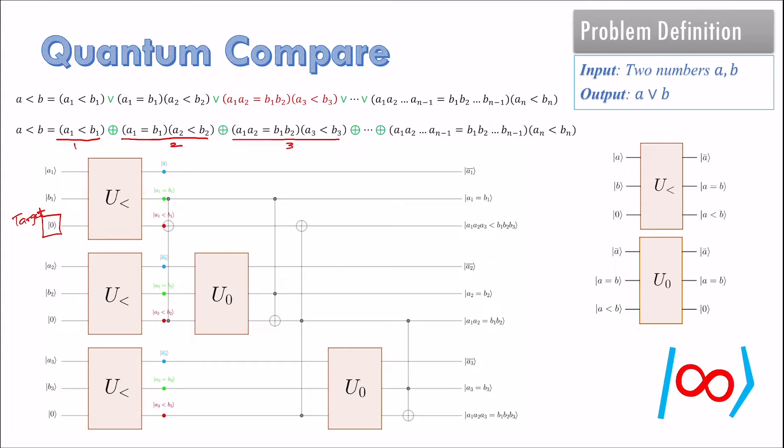First we apply the comparison gate on each bit pair. Then we use CCNOT gate to compute the second term and XOR it on the target qubit. Now that this value is no longer needed, we use the reset gate to set it back to 0. Next we set it to the product of A1 equals B1 and A2 equals B2. We apply this idea to the next bit pair as well. This completes the description of the circuit.